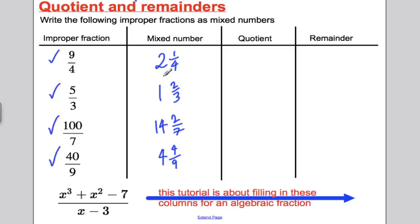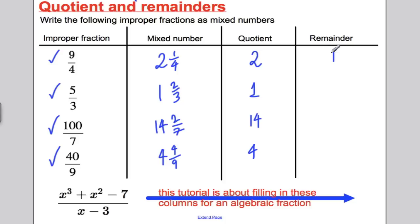The quotient is the whole number — how many whole times did the denominator go into the numerator? The quotient here is 2, here is 1, here is 14, and here is 4. The remainder is what's left: remainder 1, remainder 2, remainder 2, remainder 4. In value terms we have 1 quarter, 2 thirds, 2 sevenths, 4 ninths — but when writing down the remainder, that's our remainder.